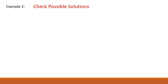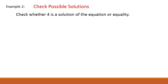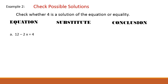Example number 2: check possible solutions. Check whether 4 is a solution of the equation. For the equation 12 − 2x = 4, substitute x = 4: 12 − 2(4) = 12 − 8 = 4. And 4 = 4, so it is correct. Therefore, 4 is a solution.